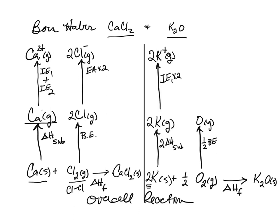Now, what charge is oxygen becoming? Oxygen becomes O²⁻ — again from the periodic table. I'm not just putting one electron on; I'm putting two electrons onto the oxygen. So I'm going to use electron affinity one — putting on the first electron — plus electron affinity two — putting on the second electron.